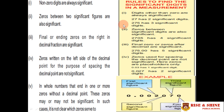The following rules are helpful in identifying significant figures. Rule number one: all digits other than zero are always significant — for example, 9 has two significant figures and another example has three significant figures. Rule number two: zeros between significant figures are also significant — for example, in 2705, the zero between 2, 7, and 5 is significant, giving four significant figures.